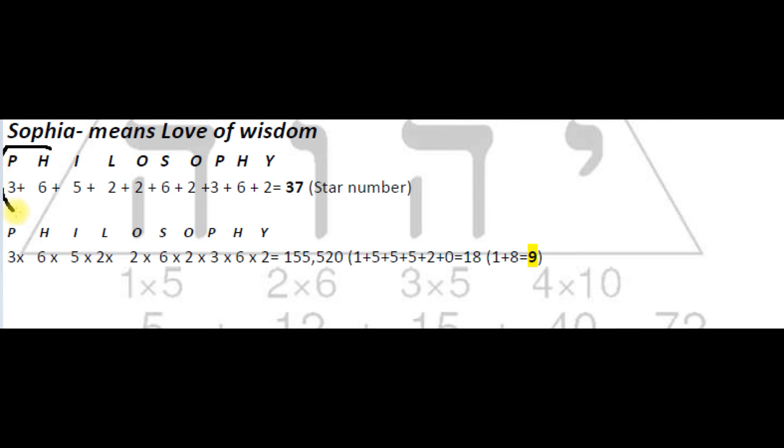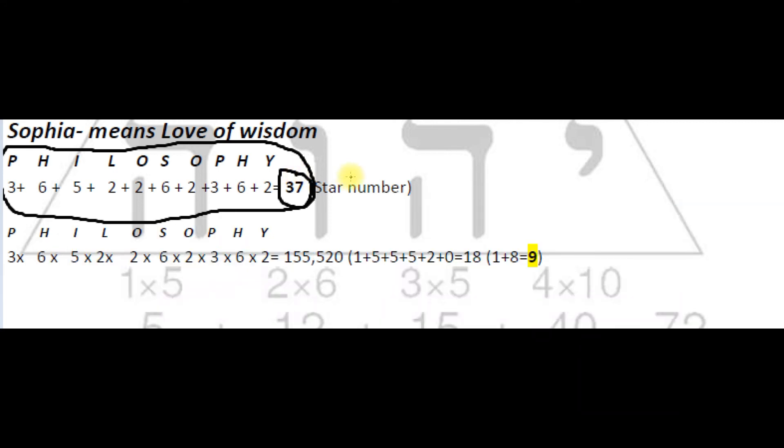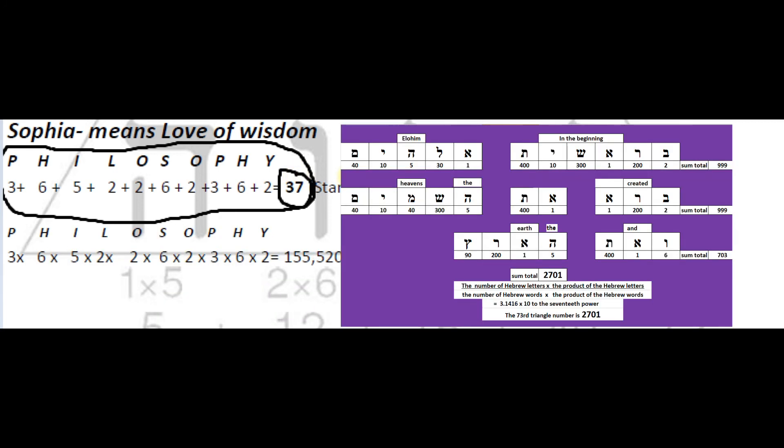So philosophy has a sum total when adding the letter values using the cipher of star and triangle number 37. 37 times the anagram 73 equals 2701, that equals the Hebrew gematria sum total letter value of Genesis one verse one.